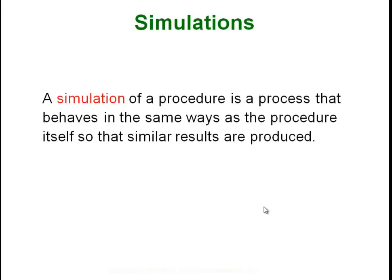A simulation is a procedure that produces the same probability distribution as the thing we're trying to observe in real life, like having kids. We can't go around and observe a bunch of people having kids, but since having a boy or a girl is a 50-50 shot, we can flip a coin. Every time it comes up heads it's a boy, every time it comes up tails it's a girl or vice versa. That is one way of simulating a real-world event.